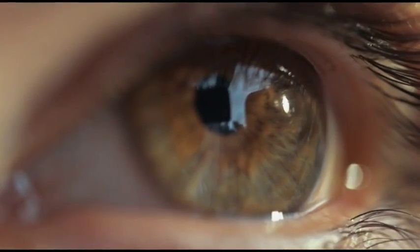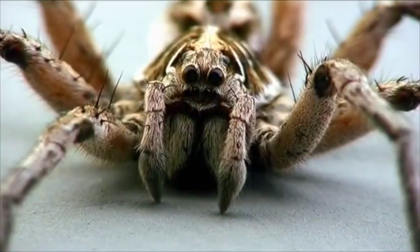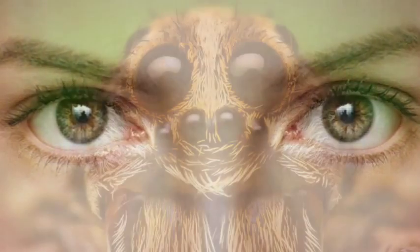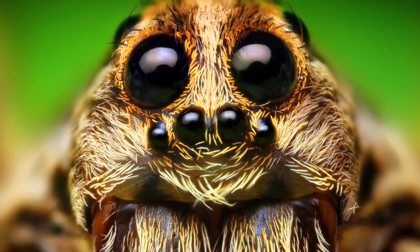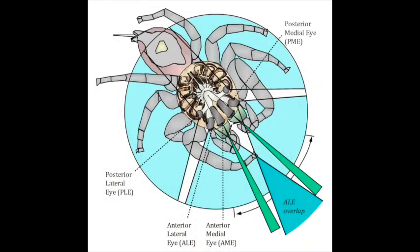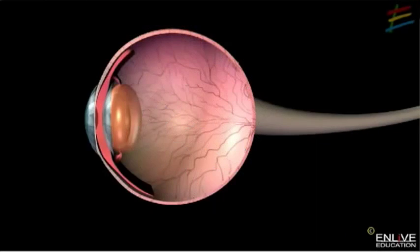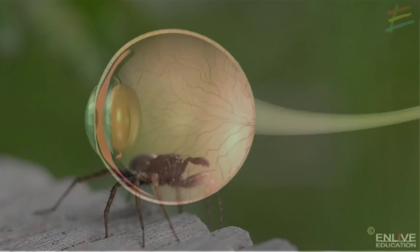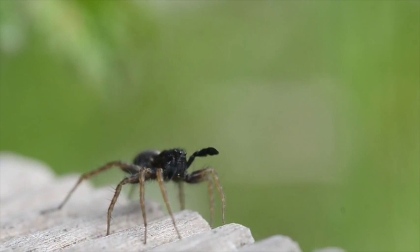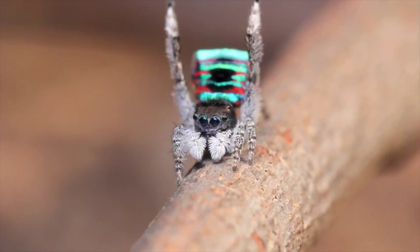Some noted differences between human and spider eyes include: the number of eyes each species has, namely one pair for humans and generally four pairs for spiders; the general structure of the eyes of each species, both varying in anatomical features; the set focal length of each pair of a true spider's eyes due to a rigid lens, versus the multi-focal length in human eyes due to a moveable lens and cornea. Lastly, spider eye retinas have relatively coarse-grained mosaics of receptor cells and as such their resolution is much poorer than in the human eye. These structural differences reflect the diet, behaviour, and environment of the two species.